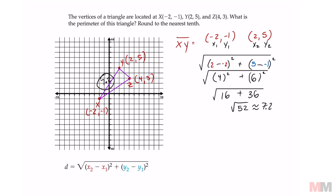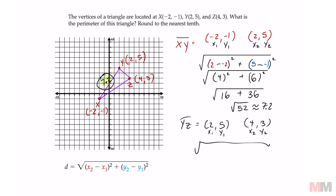Take a wild guess how many times we're going to have to do this — perimeter is the distance around, so we're going to have to do this two more times. Now we do YZ, going through it a little faster. First, label stuff — x1, y1, x2, y2. Set up the formula: two sets of parentheses with a minus sign, squared, added together. Plugging in the numbers: it's going to be 4 and 2 for the first set, and 3 and 5 for the second.